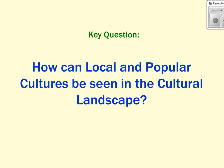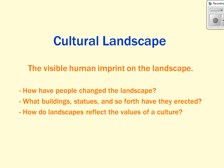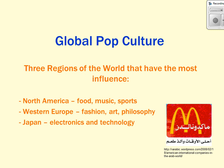How can local and pop cultures be seen on the cultural landscape? The cultural landscape is the visual human imprint that people make on their place — the buildings they build, the art they make, the stores, restaurants, and schools, all the things humans leave that tell us a lot about culture. Pop culture has left its mark on the world, specifically through the three regions with the most influence: North America for food, music, and sports influences Western Europe and Japan; Western Europe influences North America and Japan through fashion, art, and philosophy; and Japan influences North America and Western Europe through electronics and technology.